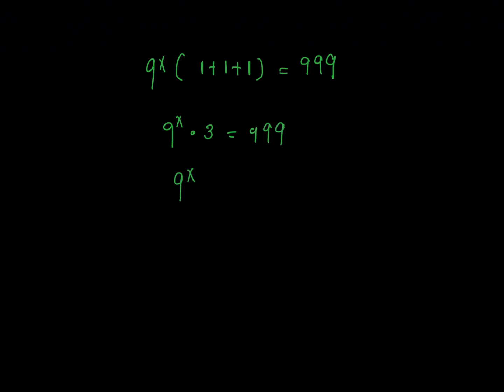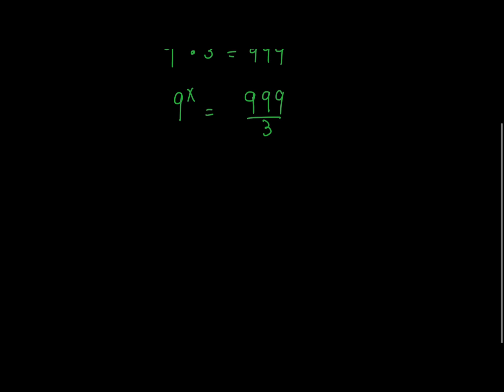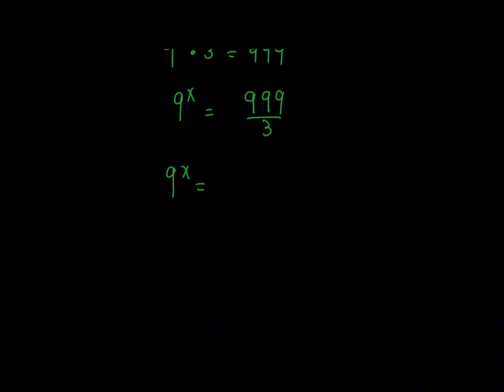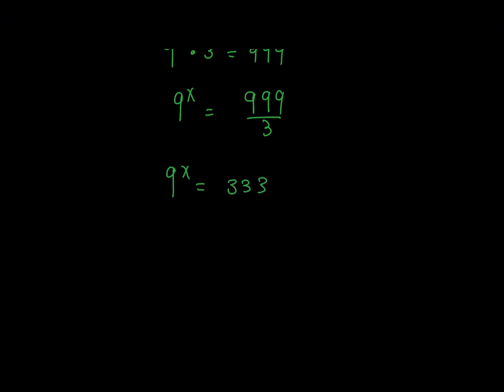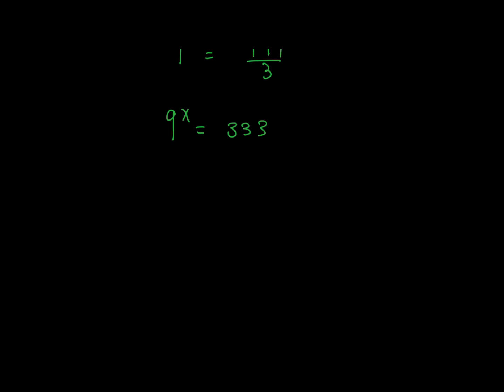From here we're going to divide both sides by 3. So 999 divided by 3 is just 333.